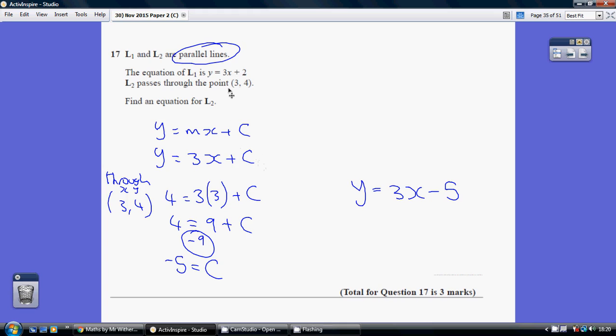Now, we know it goes through the point 3, 4, so we know when x equals 3, y equals 4. So, let's just substitute that into our provisional formula here. Y is 4 and x is 3. So, 4 equals 3 times 3 add c.